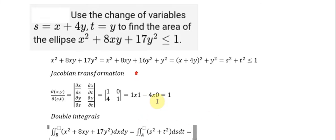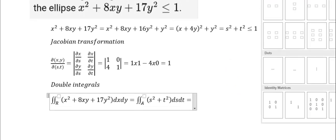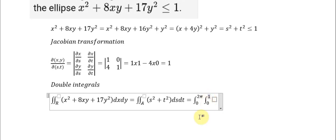We can see that this is a circle and the radius is 1. We need to calculate the area surrounding the circle. That's why the boundary of theta goes from 0 to 2π. The radius boundary goes from 0 to 1, because the radius must be a positive number. From 0 to 2π represents going around the circle once.